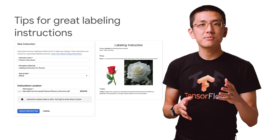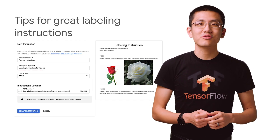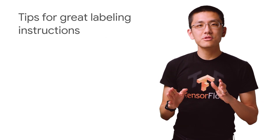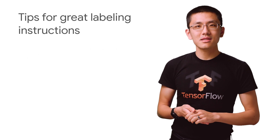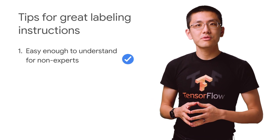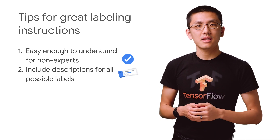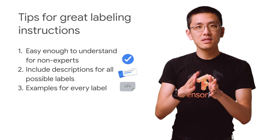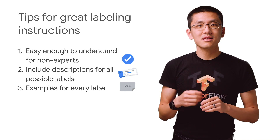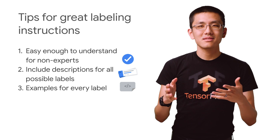Once you have a dataset and corresponding label set created, it's time to create some instructions for your labelers. Here are some tips for making great instructions. First, remember that labelers don't have your domain knowledge, so make sure your instructions are easy enough to understand. Second, be sure to include a list of all your possible labels with a description of each label. Third, in your instructions, include examples for every single label, making sure to give at least three positive examples and at least one negative example covering different kinds of cases.